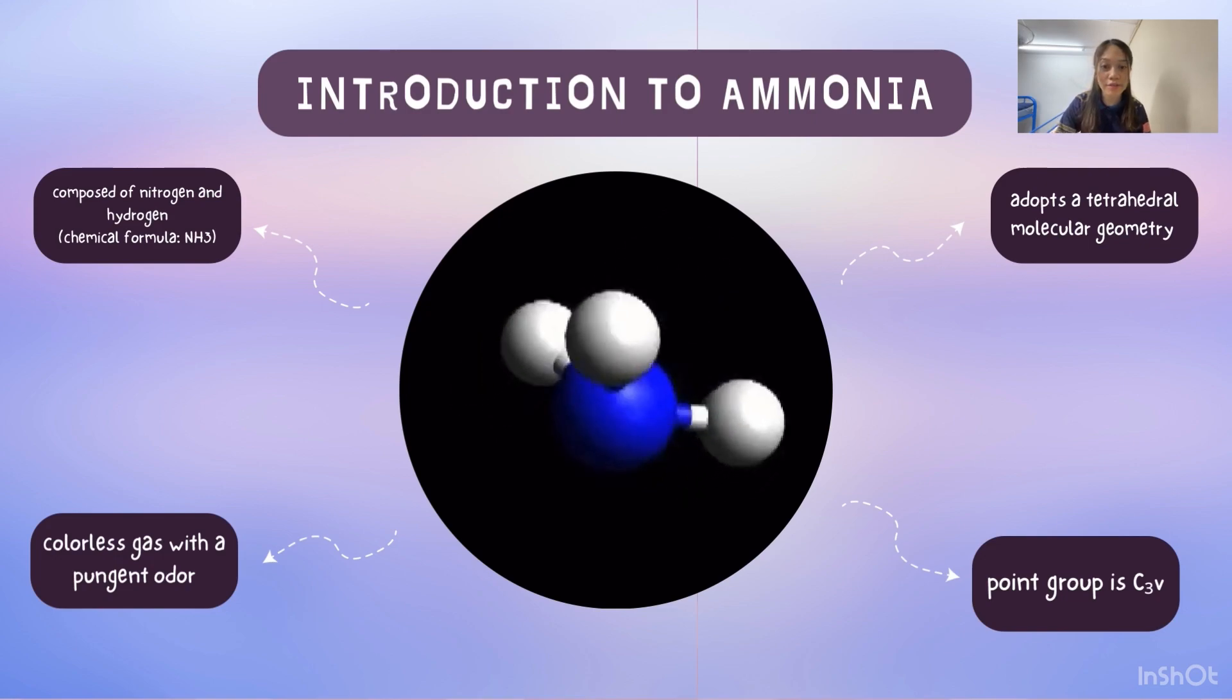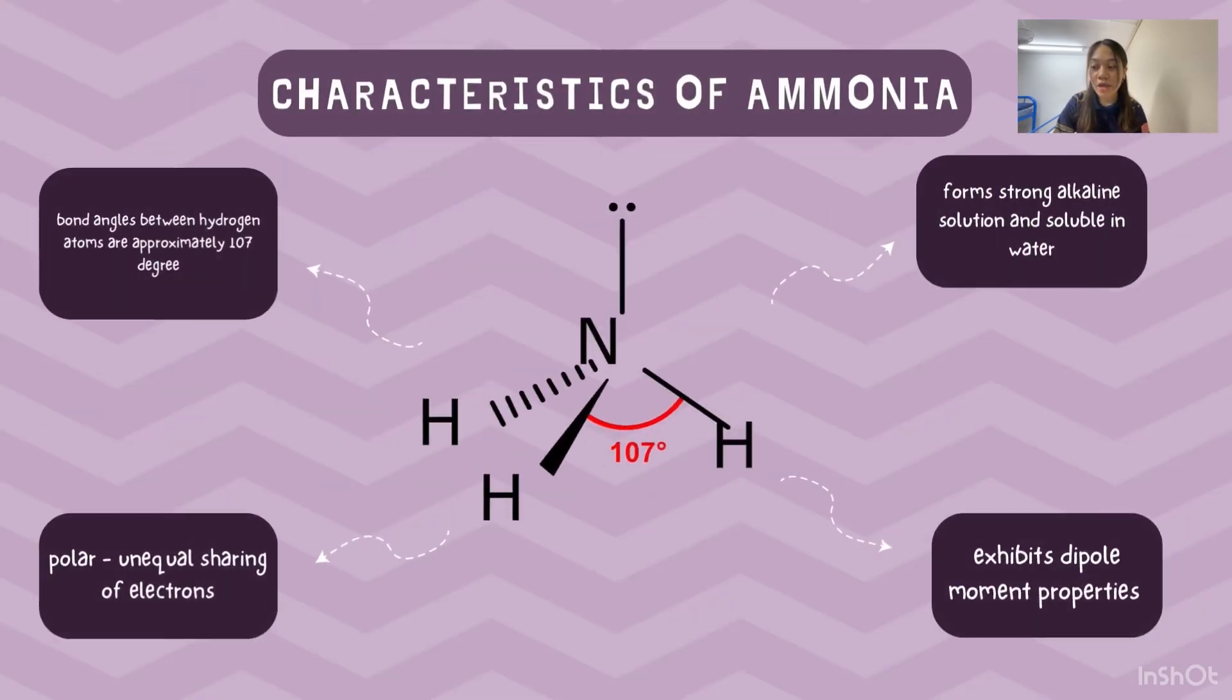Moving on to the characteristics of ammonia, the bond angles between hydrogen atoms are approximately 107 degrees.